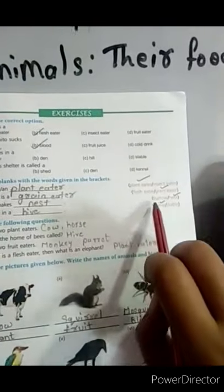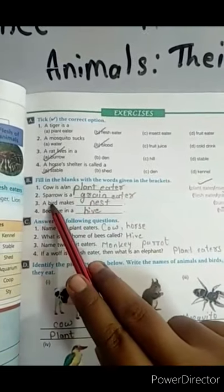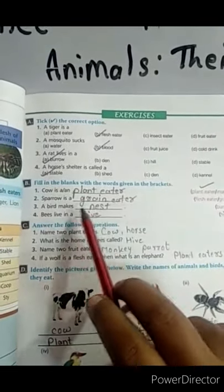A bird makes a burrow or nest. And the right answer is a bird makes a nest.